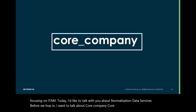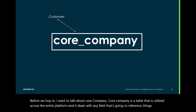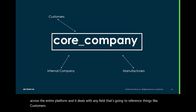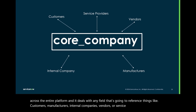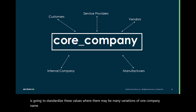Core Company is a table that is utilized across the entire platform, and it deals with any field that's going to reference things like customers, manufacturers, internal companies, vendors, or service providers. This process is going to standardize these values where there may be many variations of one company name present in the Core Company table.